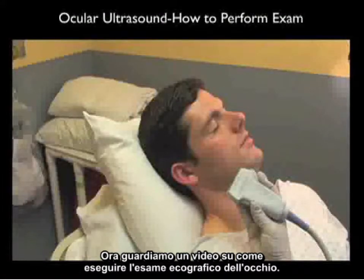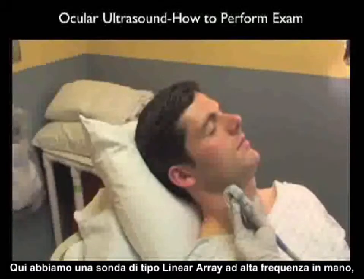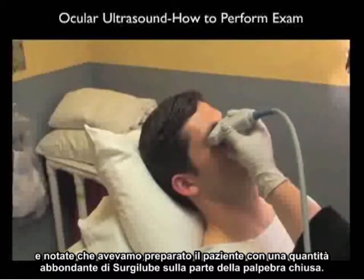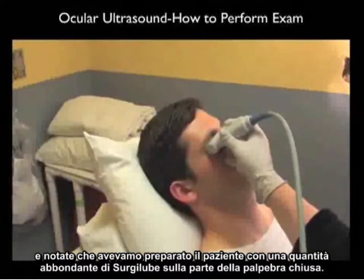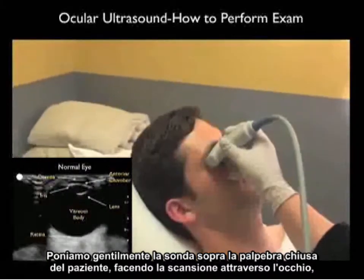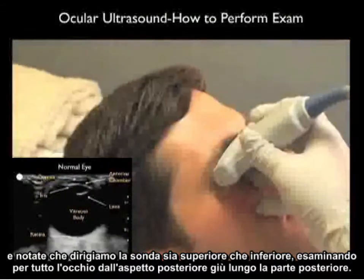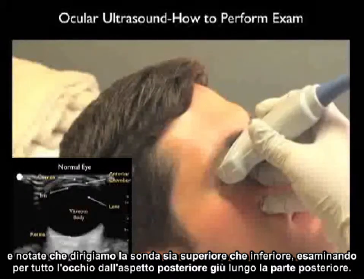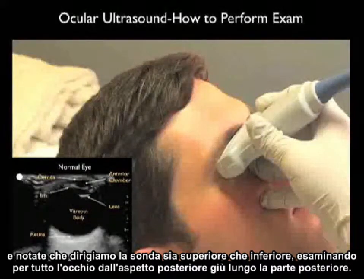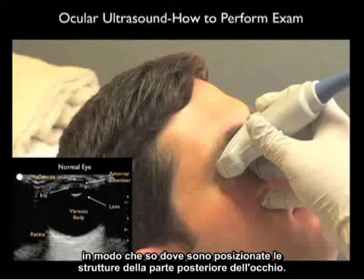Now let's watch a video on how to perform the ocular ultrasound examination. Here we have the high-frequency linear array probe in hand, and note we've prepared our patient with a copious amount of surgery lube on the outer part of the closed eyelid. We're going to gently place the probe over the patient's closed eyelid, scanning through the eye. Note that we're going to orient the probe both superior and inferior, looking all the way through the eye from the anterior aspect down through the posterior part. I like to have the probe marker oriented laterally towards the outer part of the patient's face so that I know where the structures of the posterior part of the eye are oriented.